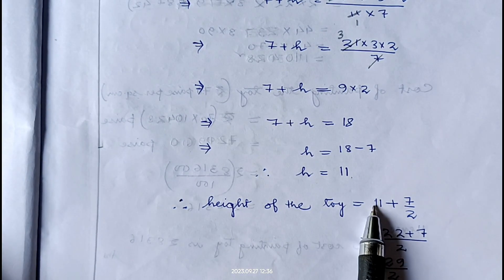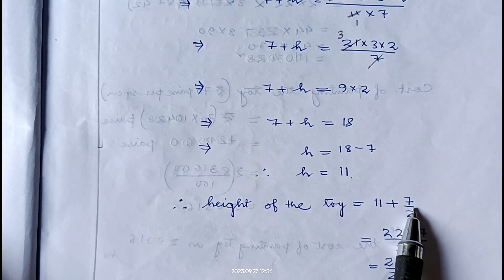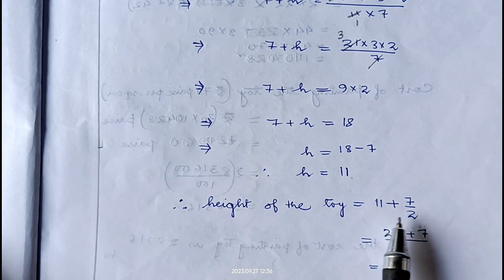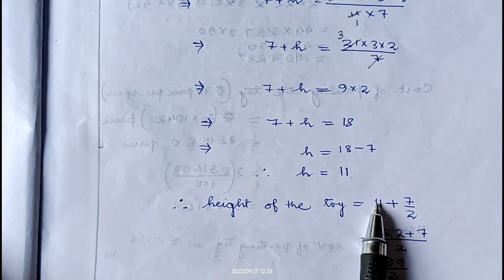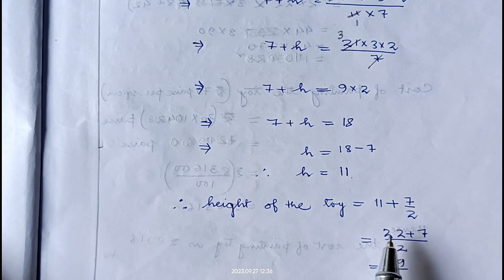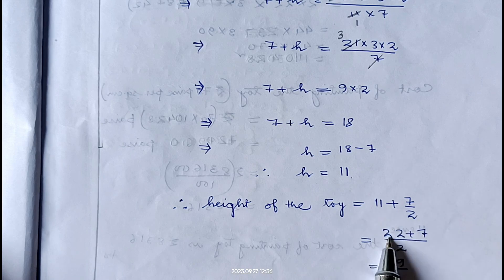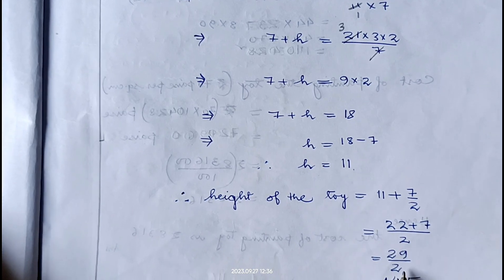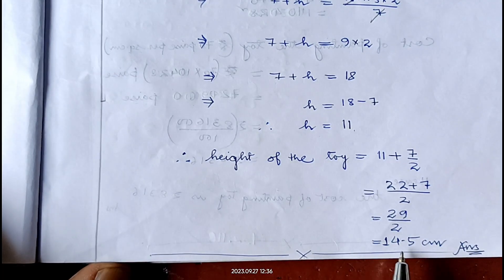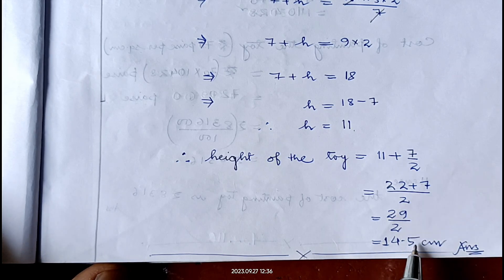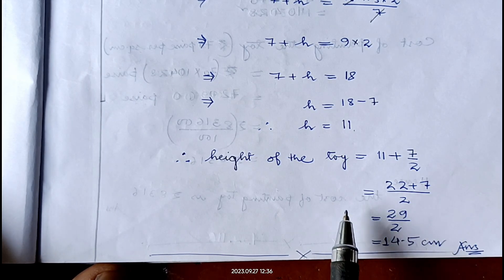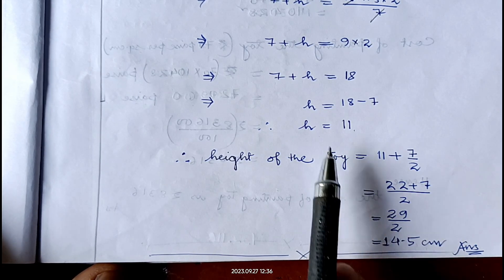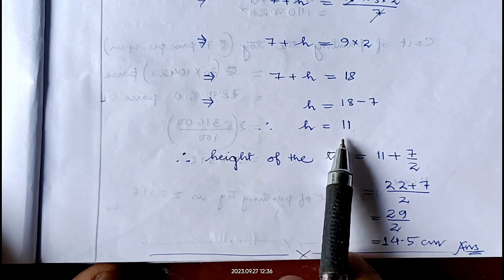Total height of the toy equals height of conical part plus height of hemispherical part, which equals 11 plus 7/2. Taking LCM of 2: (22 plus 7) by 2 equals 29 by 2, which gives 14.5 centimeter. Therefore total height of the toy is 14.5 centimeter and the height of the conical part is 11 centimeter.